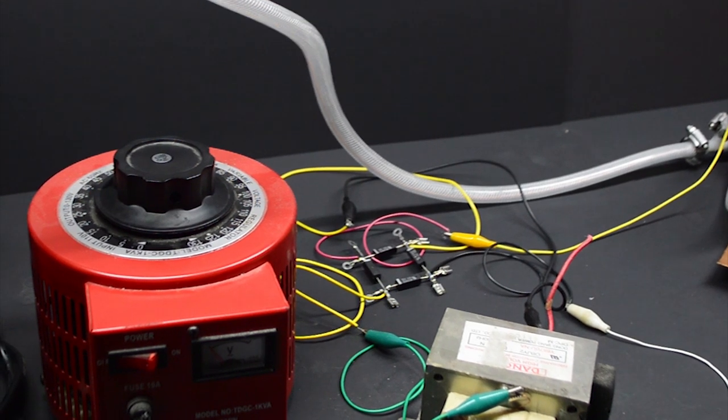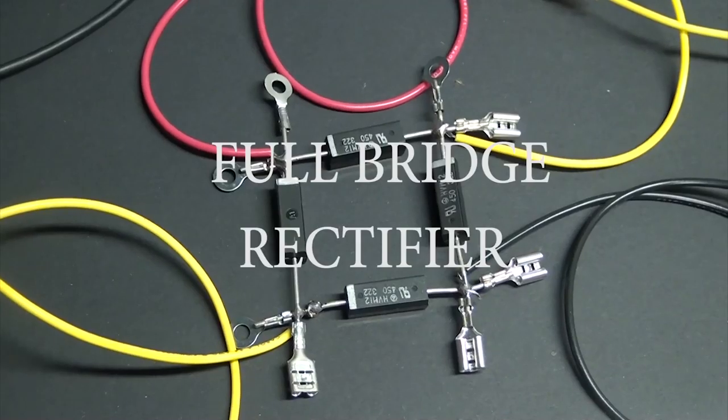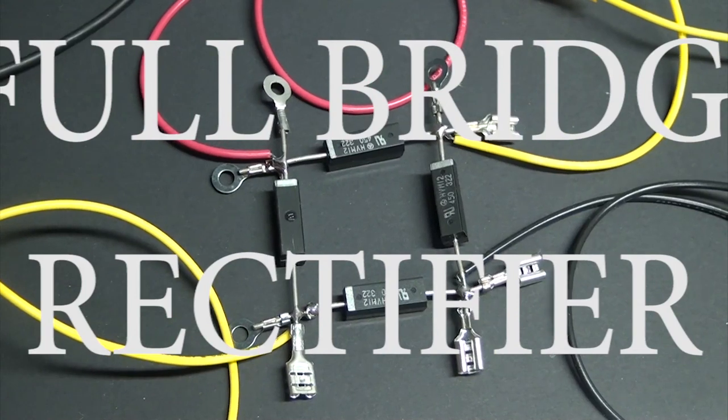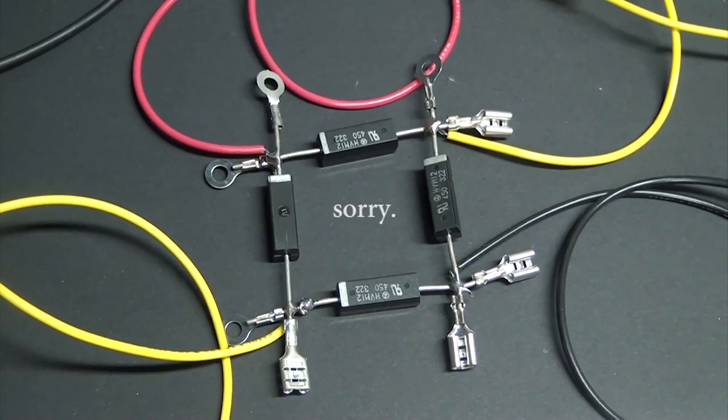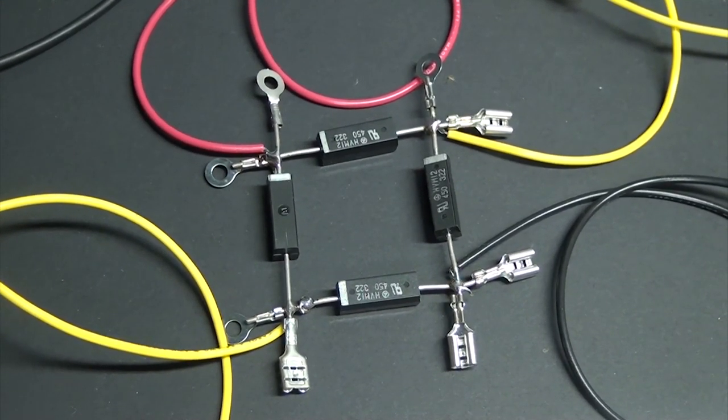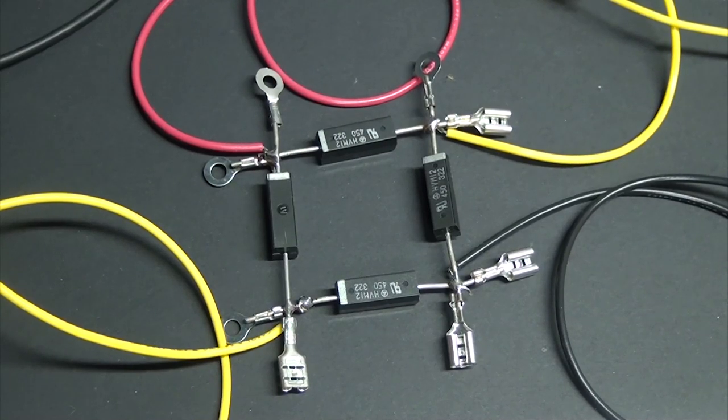So to convert between them, I'll be using a, ahem, FULL BRIDGE RECTIFIER! I'm sorry, I couldn't resist. The rectifier is made out of four microwave oven diodes, arranged like so. You connect the AC input here and here, and get a positive and negative DC output.